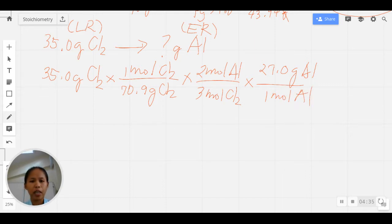This is our mass-to-mass calculation. We can cancel out gram CL₂, mole CL₂ will cancel out, mole Al cancel out, and we get gram Al. Inputting all of this in the calculator, grouping the numerator and then dividing by another group of the denominator, you will get the answer to be 8.89 grams of Al.